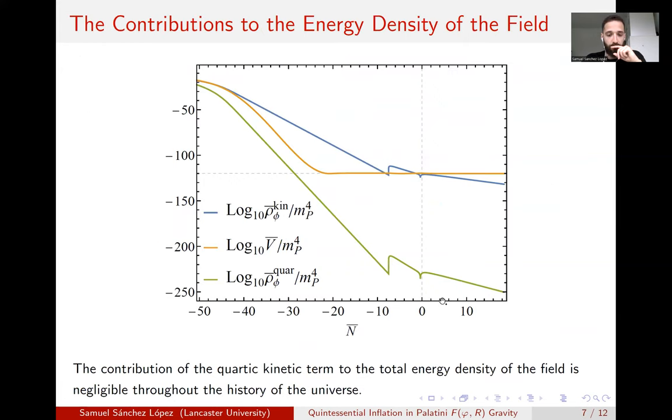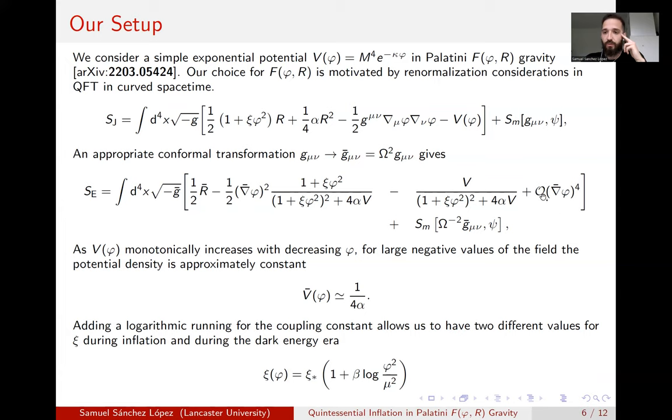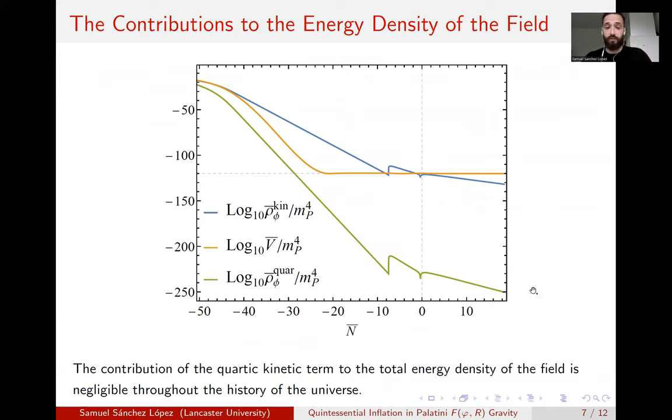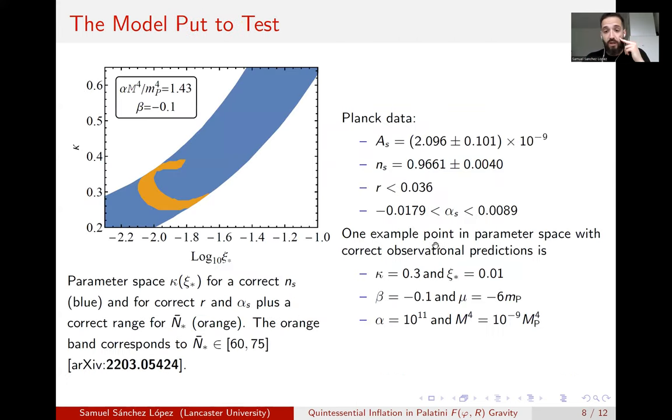Okay. So you might wonder, do these higher order kinetic terms impact the dynamics? And the fact is that they don't. We solved the full dynamics in the Jordan frame numerically. We also, in our paper, we also did a lot of analytical treatment, but we solved the dynamics numerically because it's not analytically fully solvable. And we found that the quartic kinetic terms don't play a role. Here I'm showing the different contributions to the energy density of the inflaton. In blue is the kinetic term, so just φ dot squared over two. In orange, we have the potential and in green, the quartic kinetic terms. And as you can see, they're all negligible.